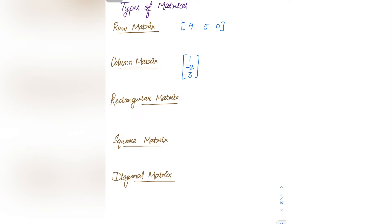Next is the rectangular matrix — a matrix in which the number of rows and the number of columns are not equal. For example, the matrix we just studied with elements [4, 6, 2 / 8, 7, 3] has 2 rows and 3 columns, so number of rows is not equal to number of columns. This is a 2 into 3 order matrix, meaning it is a rectangular matrix.